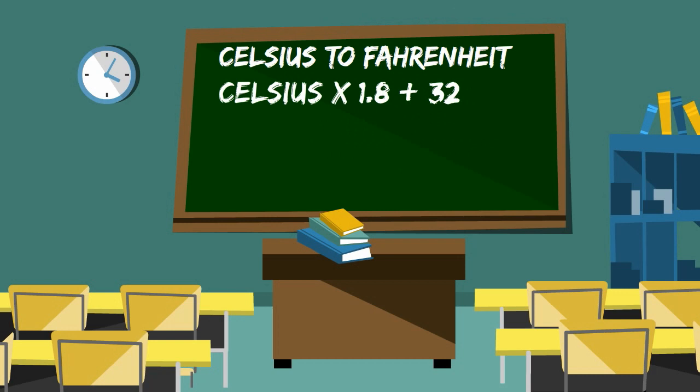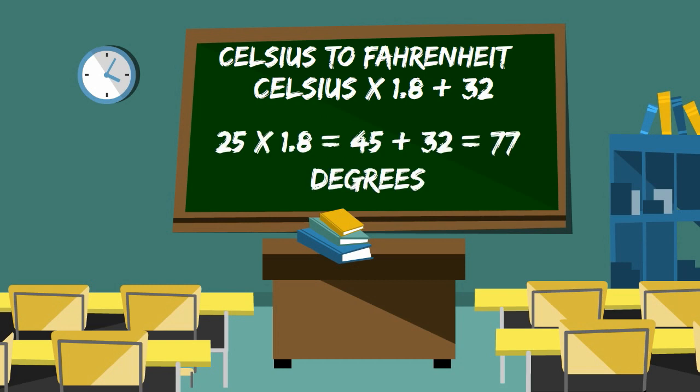Let's compare our estimation to the actual conversion. 25 times 1.8 equals 45 plus 32 equals 77 degrees Fahrenheit. Our estimation was close. Remember it is an estimation and not an exact number.